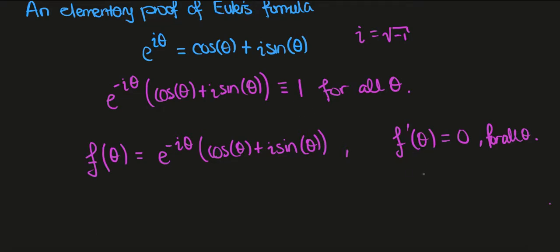And then it suffices to show that f of zero is 1, and then it will be 1 for all values of theta.